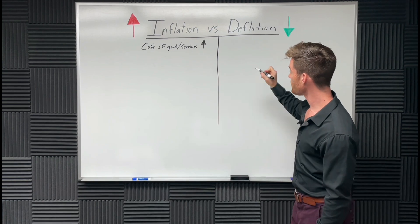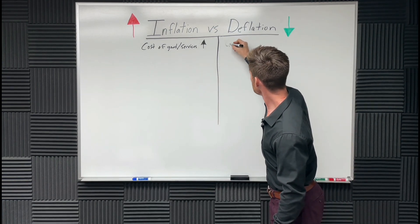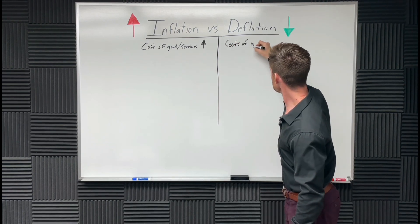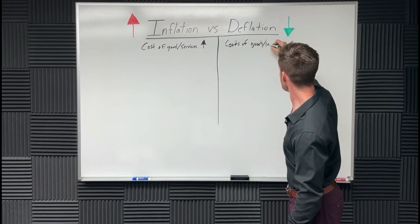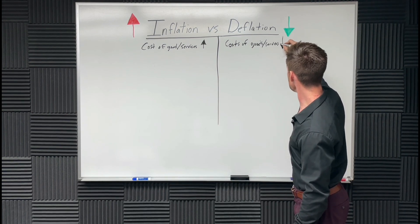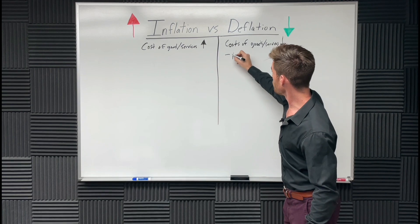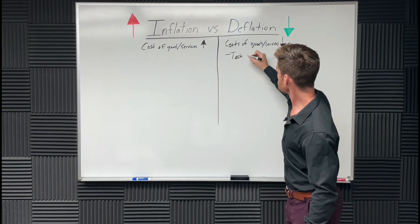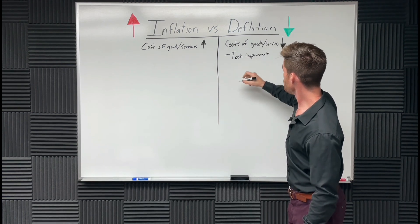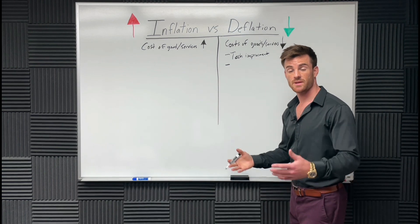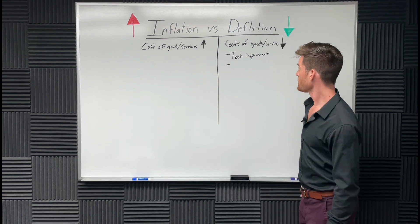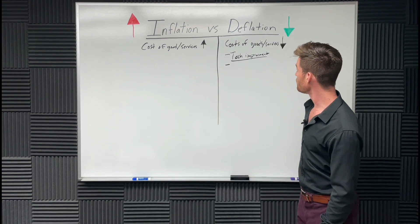What is deflation? Deflation is when the cost of goods and services goes down. This could be due to a technological improvement. It could be due to people actually being fair with their money and backing it to real assets. Let's go over tech improvements. What kind of tech improvement could make deflation?